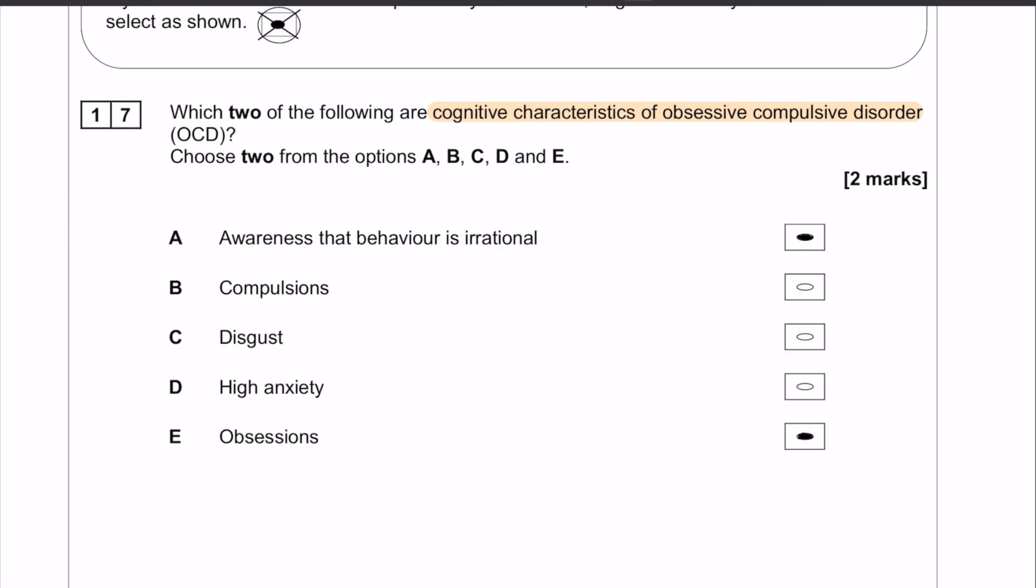So question number 17 is, which two of the following are cognitive characteristics of OCD? Okay, so cognitive characteristics are thought-based characteristics and we have two main ones here.